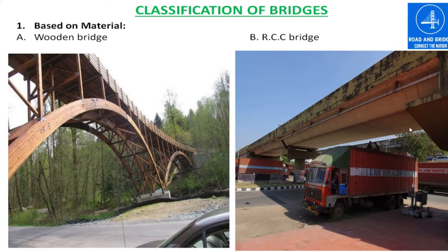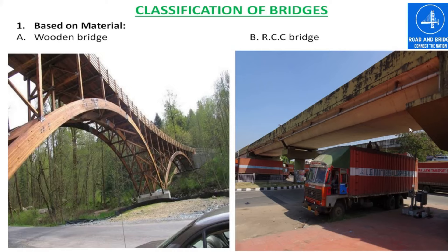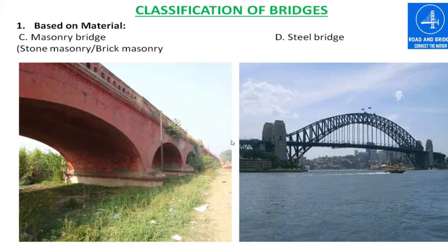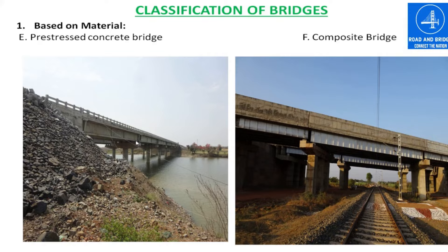Here, this is a wooden bridge. This is an RCC bridge. This is a masonry bridge, and masonry bridge is also classified into two categories: stone masonry and brick masonry. This is a steel structure. This is a PSC bridge — that means pre-stressed concrete — and this is a composite bridge.